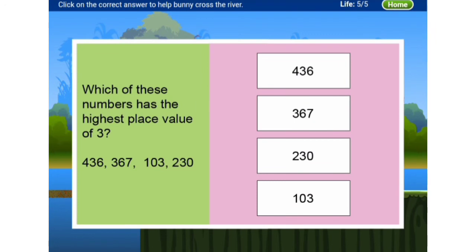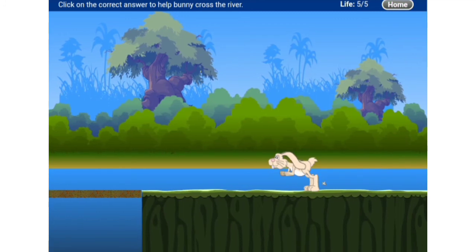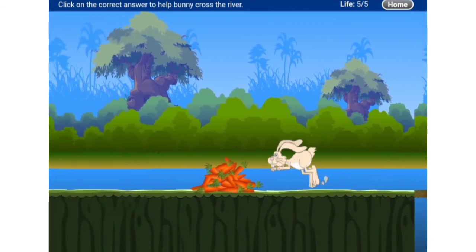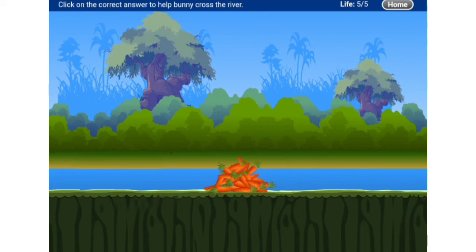Which of these numbers has the highest place value of three? All the numbers contain the digit three, but we need to find where three has the highest place value. Hundreds is the highest place. In the second number, three is in the hundreds place — that number is three hundred sixty-seven, 367. The bunny crossed the bridge and finally reached the carrot!